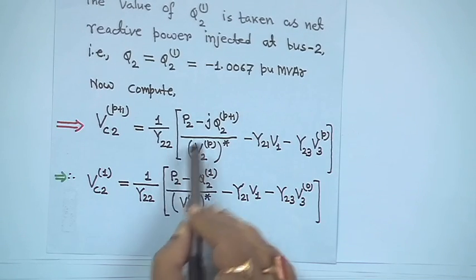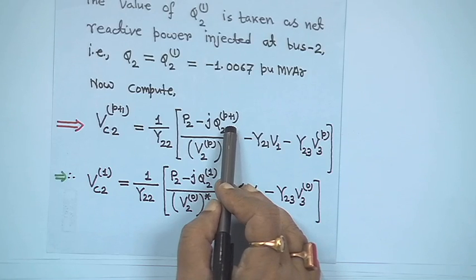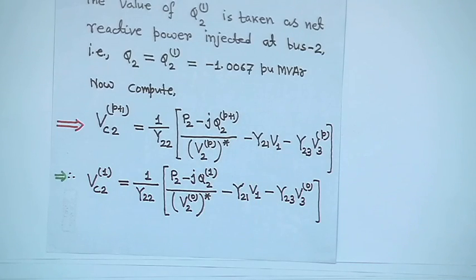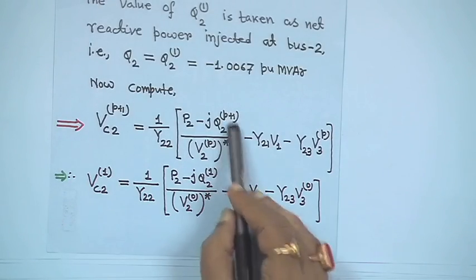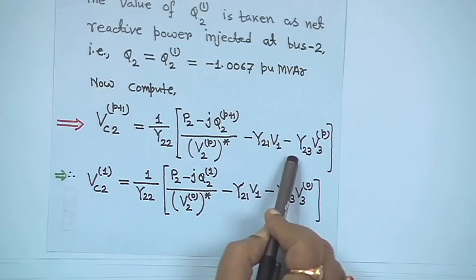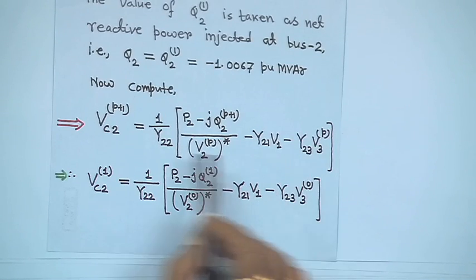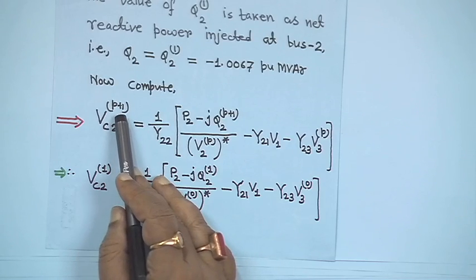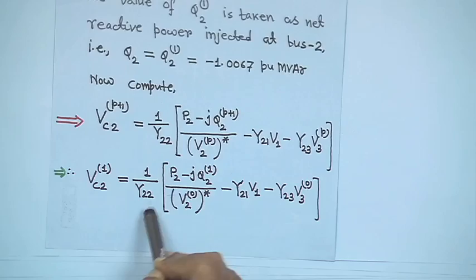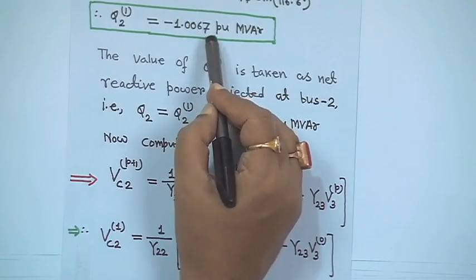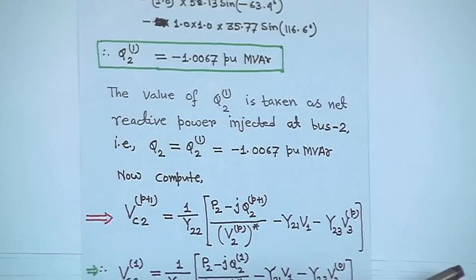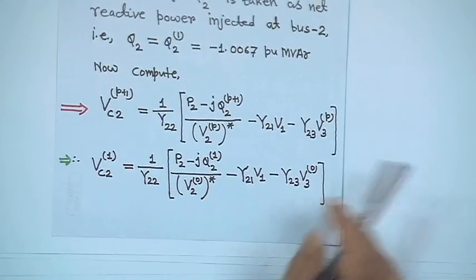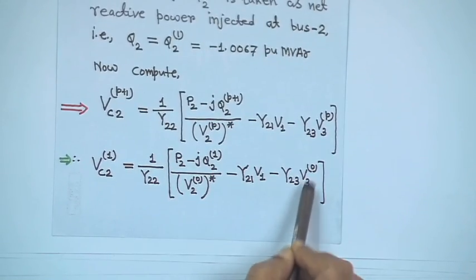Using the standard equation: V_C2^(p+1) = (1/Y₂₂) · [(P₂ − jQ₂^(p+1)) / V₂^(p)* − Y₂₁V₁ − Y₂₃V₃^p]. When p = 0, Q₂¹ = minus 1.0067 and P₂ = minus 2.556 are substituted. Computing P₂ − jQ₂¹ divided by Y₂₂ gives 0.04725 angle 221.9 degrees, with Y₂₁/Y₂₂ = minus 0.3846 and Y₂₃/Y₂₂ = minus 0.6153.